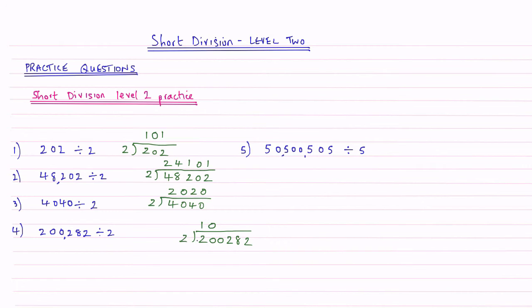So 2s into the first 0 is nothing. 2s into the third 0, nothing. 2s into 2 is 1. 2s into 8 is 4. And 2s into 2 is once. So my answer there is 100,141.